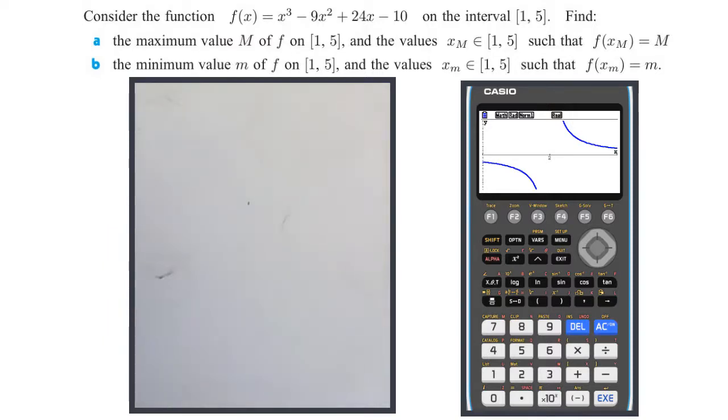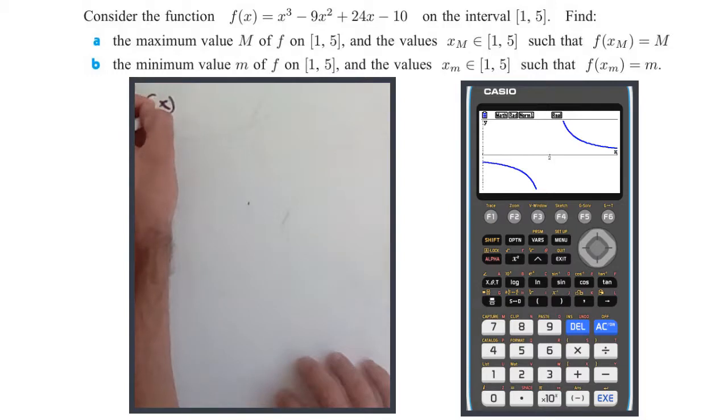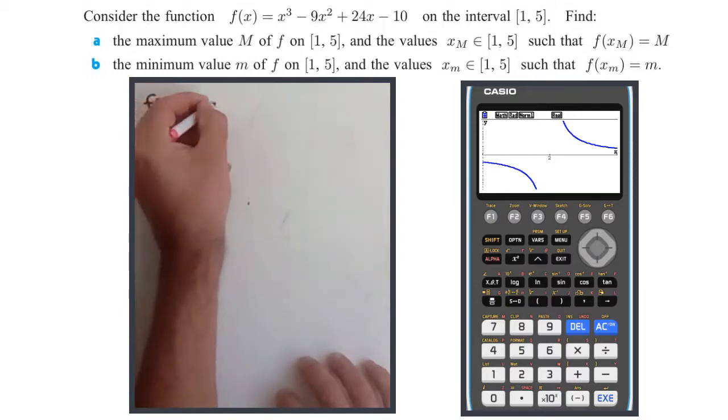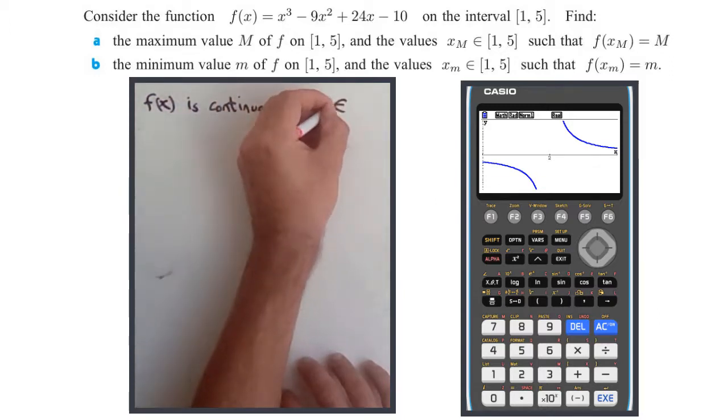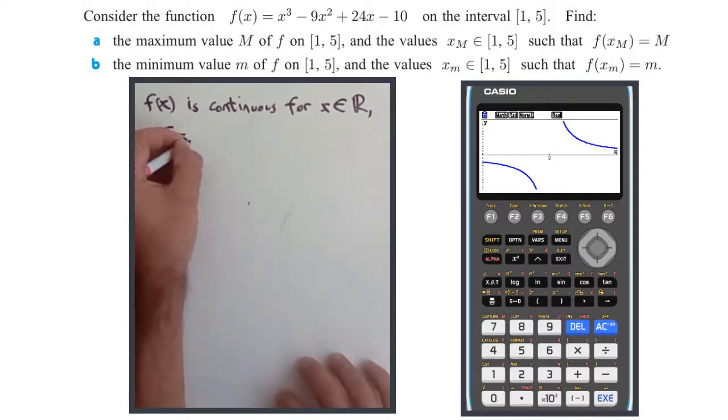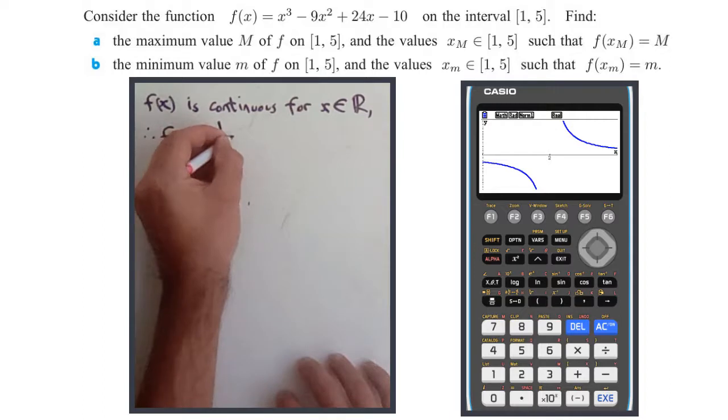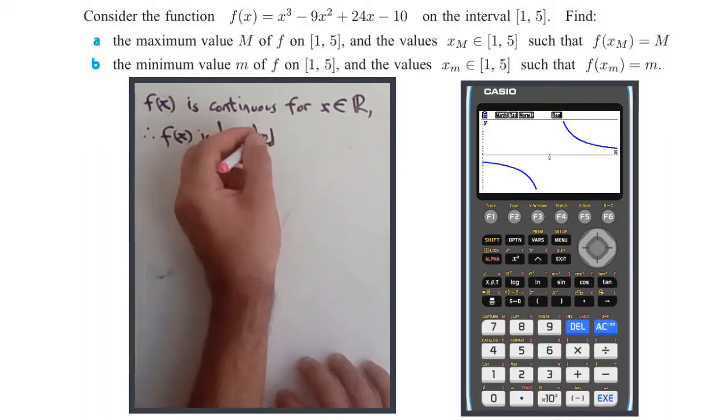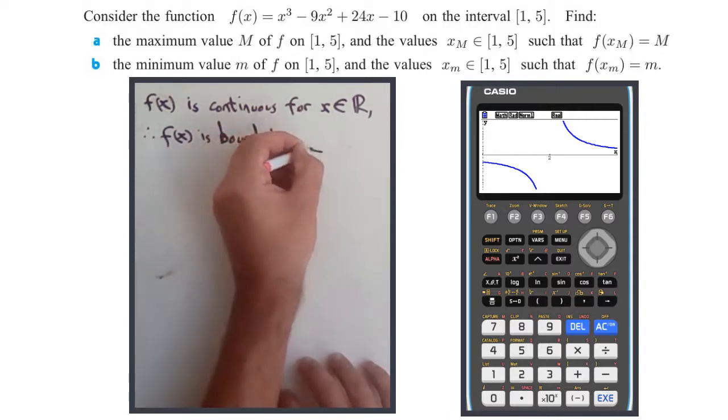This is a nice cubic function with no fractions, defined for all real x, which means it's continuous. Therefore, f(x) is bounded on the interval [1, 5].